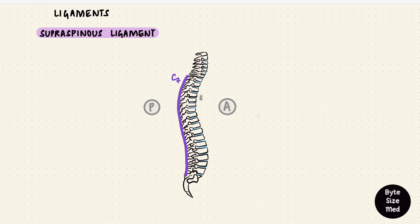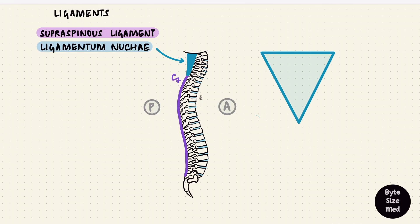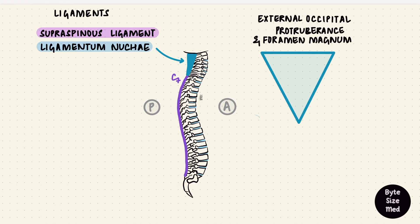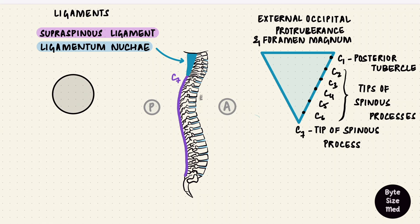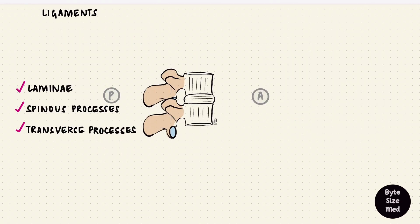From C7 upwards, the supraspinous ligament continues as the nuchal ligament or ligamentum nuchae, which is shaped like a triangle. Its base attaches to the external occipital protuberance and foramen magnum, its apex is at the tip of the spinous process of C7, and its deep part attaches to the posterior tubercle of C1 — which has no spinous process — and to the tips of all the other cervical spinous processes. Located at the back of the neck, it supports the head, resists too much flexion, and helps bring it back to the anatomical position. The last set of ligaments are the intertransverse ligaments, between the transverse processes.